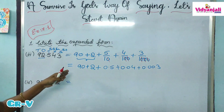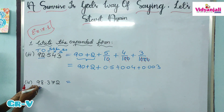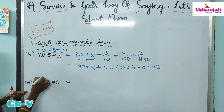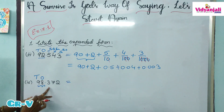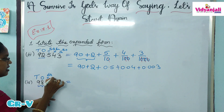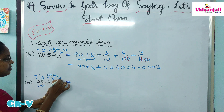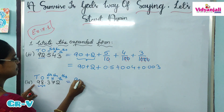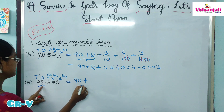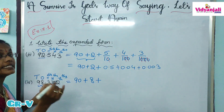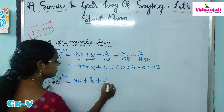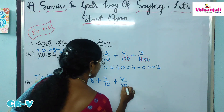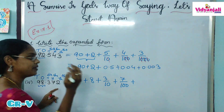So fractional and decimal expansions are over for this number. Next question: 98.372. Tell me the place values of the whole part. The place values are 1's and 10's. In the decimal part: 10ths, 100ths, 1000ths. Place value of 9 is in 10's place, so 90. 8 is in 1's place, so 8. 3 is in 10ths place, so 3 by 10. 7 is in 100ths place, so 7 by 100. 2 is in 1000ths place, so 2 by 1000.